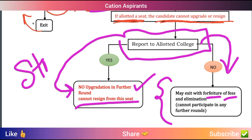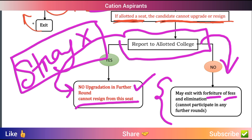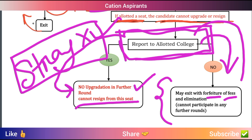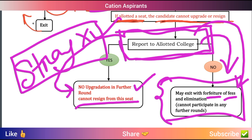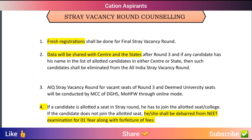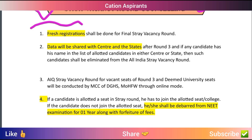You can participate in the Stray Vacancy Round Counseling. Stay Vacancy Round Counseling works in the same way — if there are vacant seats, you can participate. If you don't report after being allotted a seat, and you don't take a free exit, the whole counseling process is closed to you. Stay Vacancy Round Counseling will not be available if you fail to report.